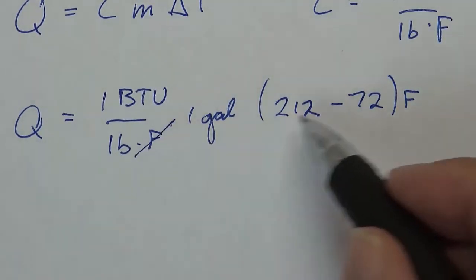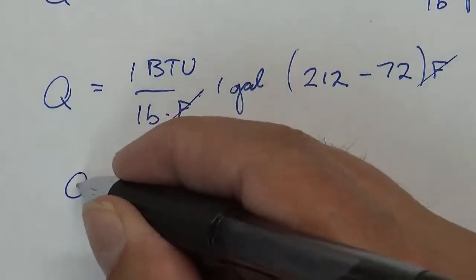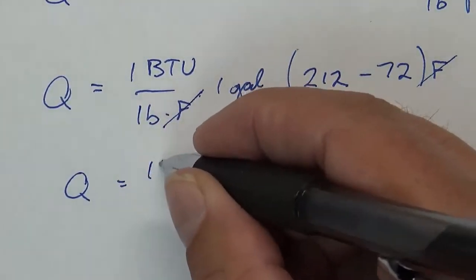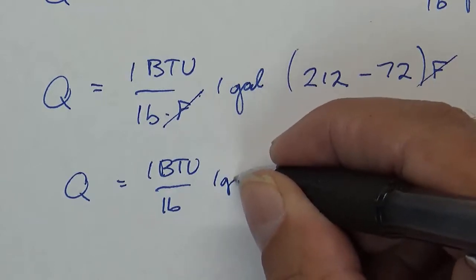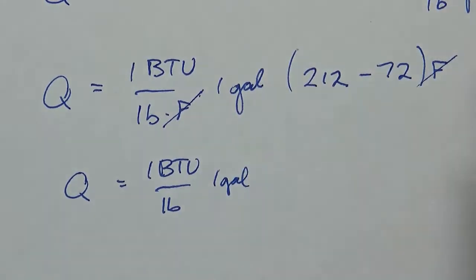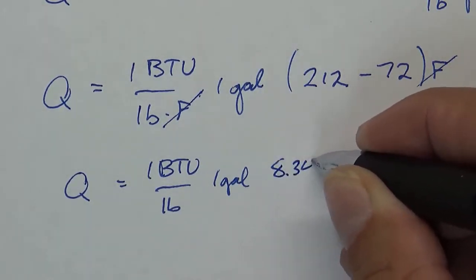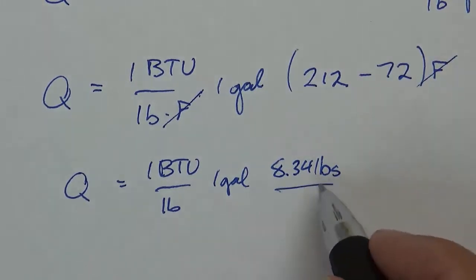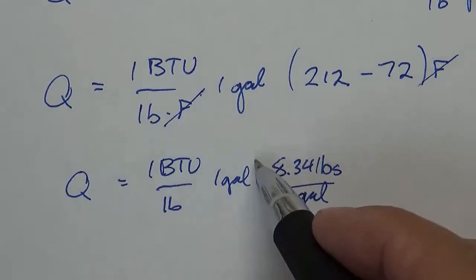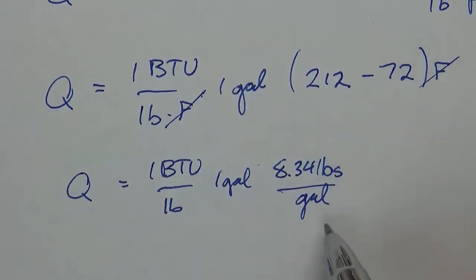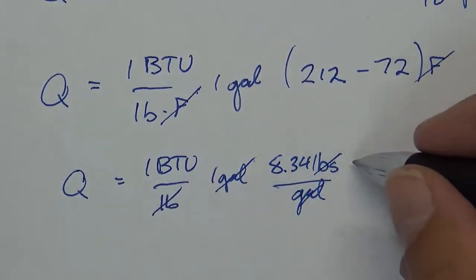So you can see the units of Fahrenheit are going to cancel away, but we've got this problem with the gallons. So let's go ahead and rewrite that. We've got one BTU per pound, we've got one gallon, and I know that one gallon weighs 8.34 pounds. So I can multiply 8.34 pounds per gallon, and that's just like multiplying or dividing by one because 8.34 pounds equals one gallon. The gallons go away, the pounds go away.